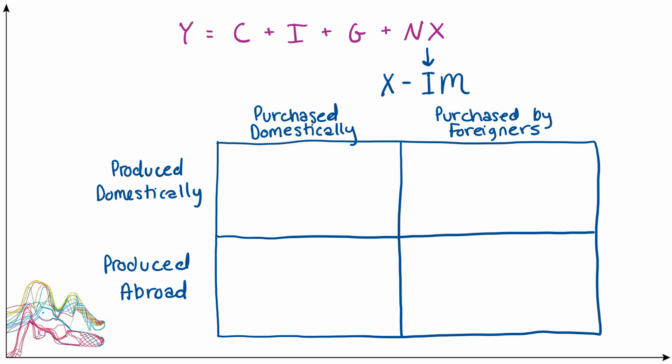In general, there are four different categories in which a good can fall when it's bought and sold. The good can either be produced domestically or within the boundaries of an economy, or it can be produced what I'll call abroad, maybe not literally abroad, but outside of the boundaries of that economy.